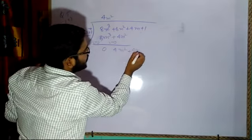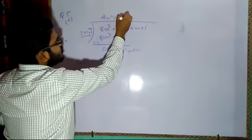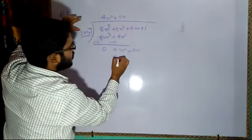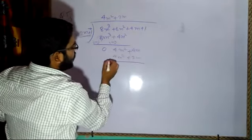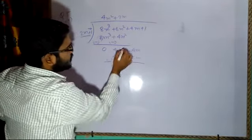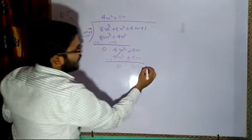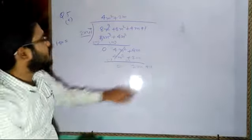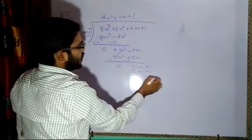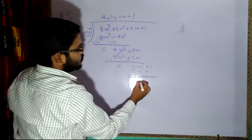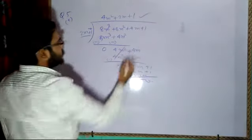To get 4m², multiply by 2m: that gives 4m² and 1 times 2m gives 2m. Change signs and subtract: 4m² cancels, and 4m minus 2m gives 2m. Bring down plus 1. To get 2m plus 1, multiply by 1: so 2m times 1 gives 2m and 1 times 1 gives 1. After subtraction everything cancels to 0. The quotient is 4m² plus 2m plus 1.